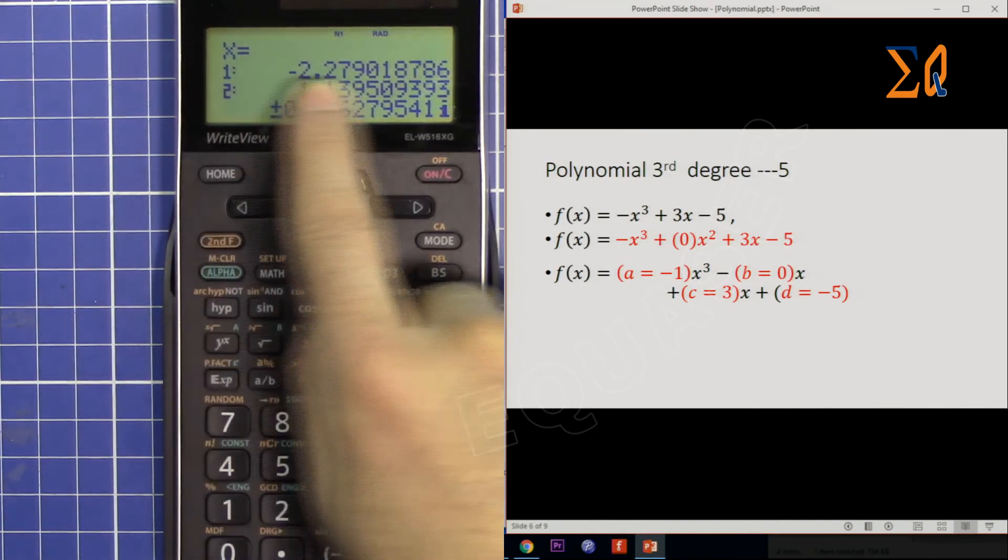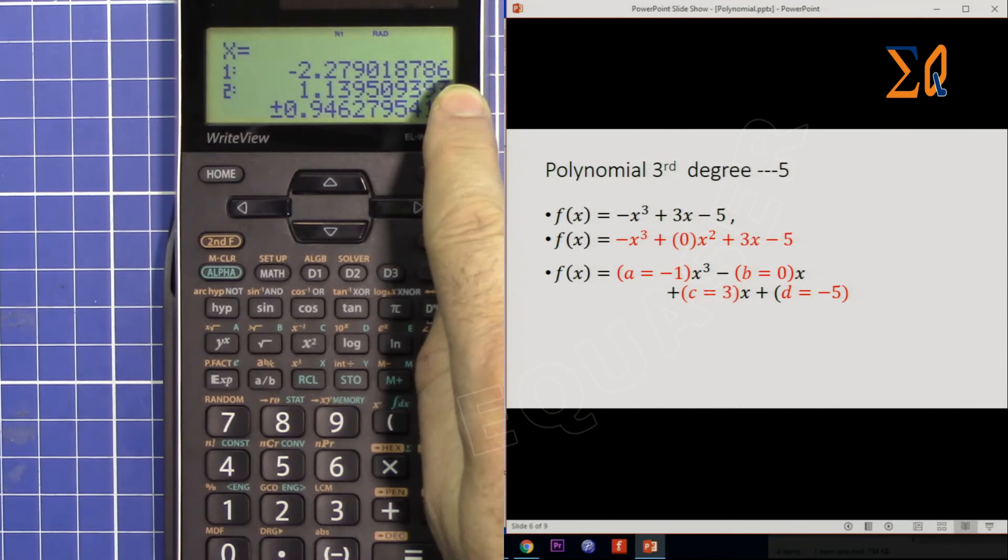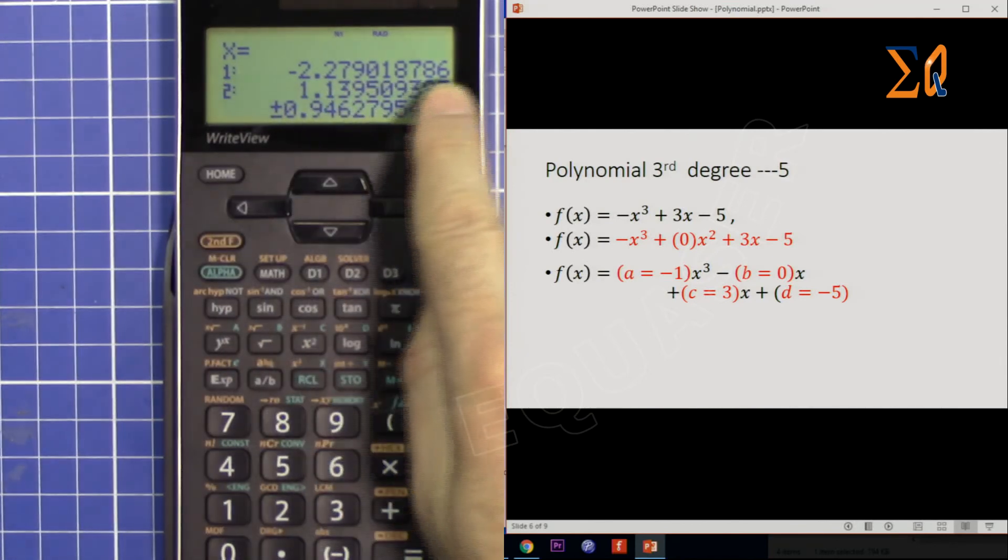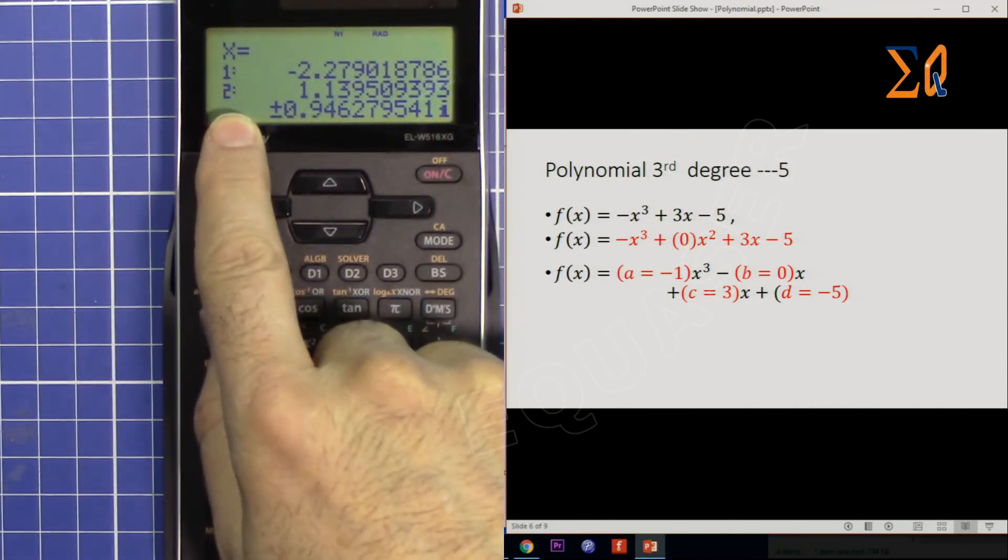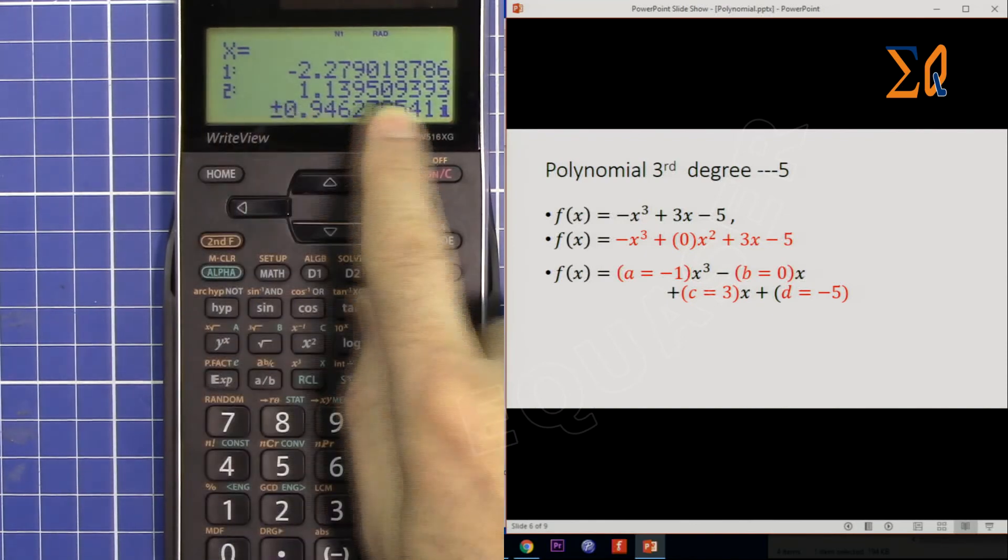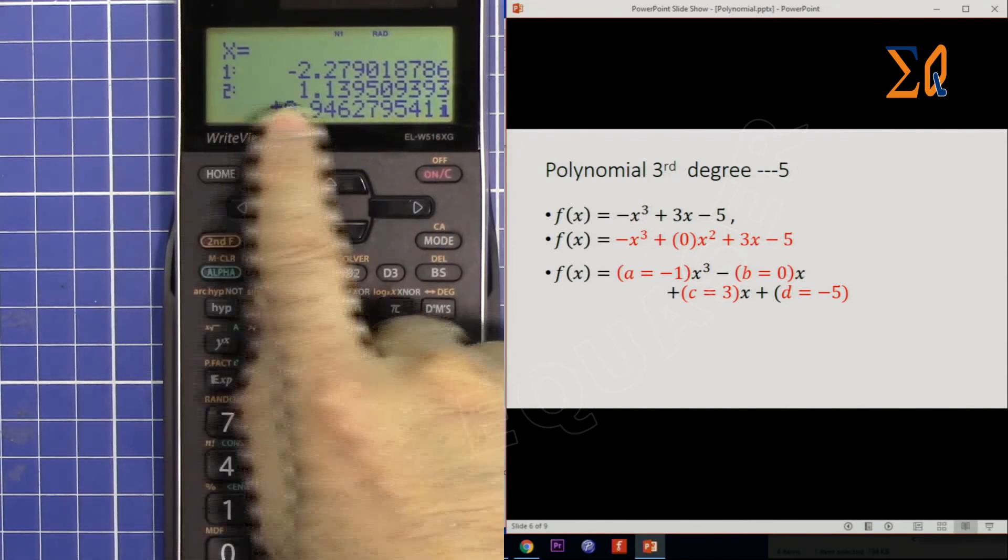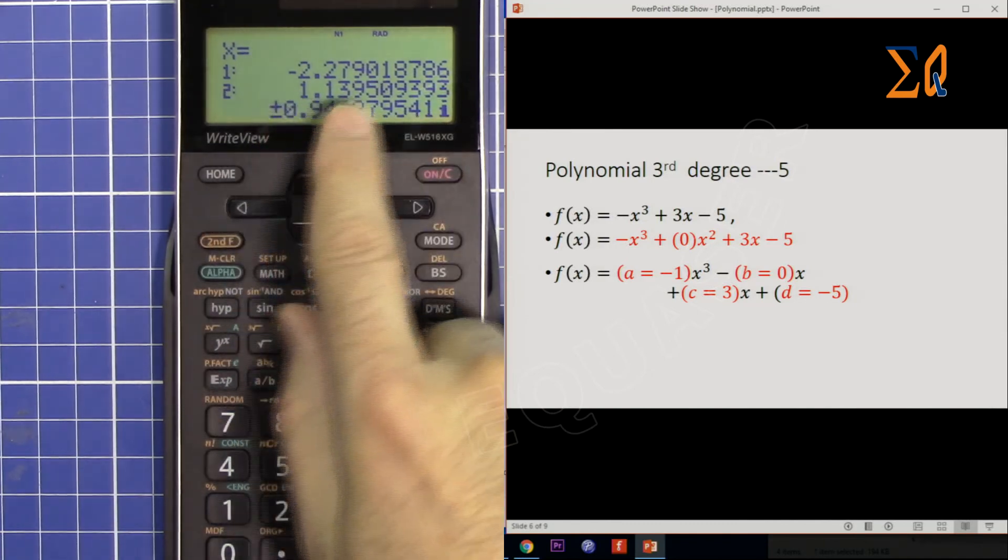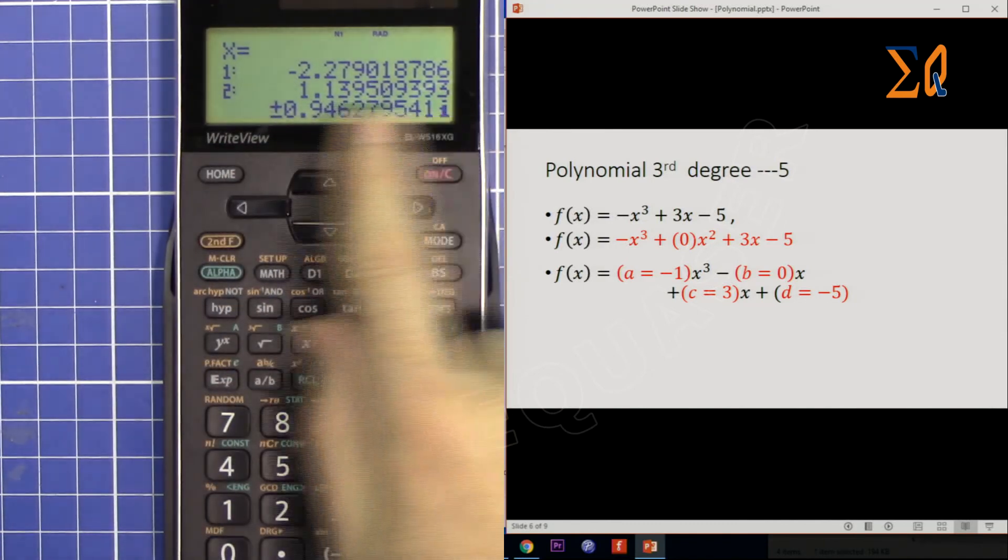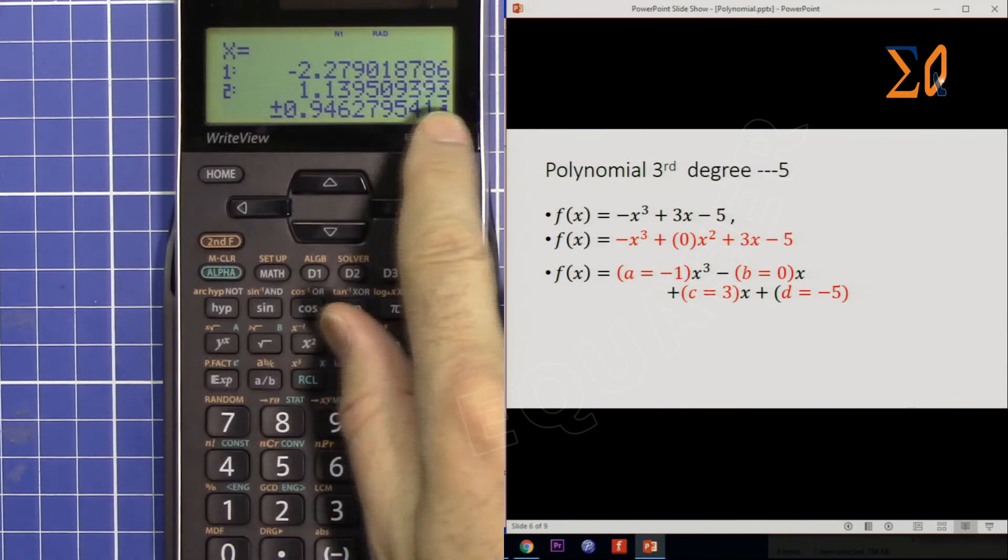I'm getting the first answer, a real number: -2.27. Then the second and third answers have plus/minus, so they have imaginary components: 1.13 + (this value)i and 1.13 - (this value)i.